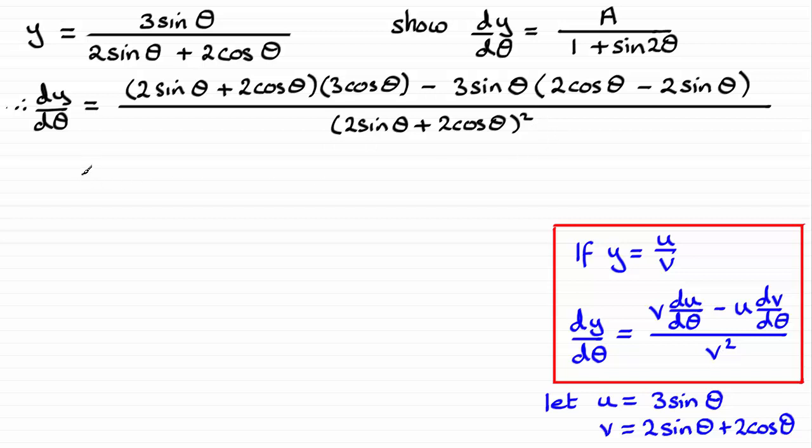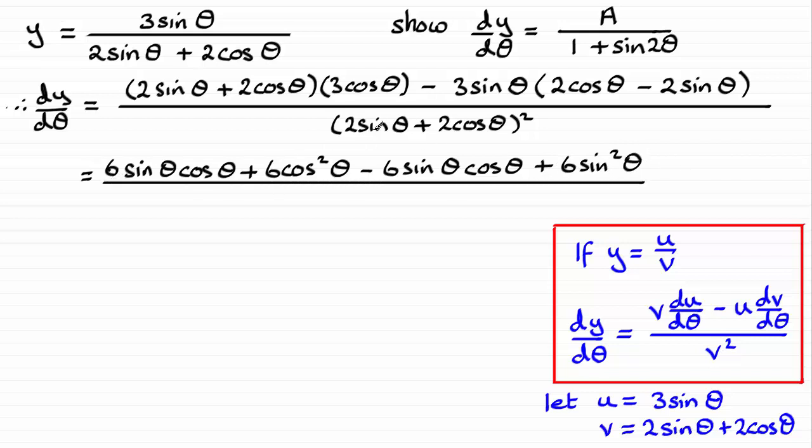So it's just now a question of tidying this up. So if we expand the first bracket, multiply this bracket with 3 cosine theta, we're going to get 6 sine theta cosine theta. And next we're going to get 6 cosine squared theta, 6 cos squared theta. And then we've got minus 6 sine theta cos theta there. And finally we've got plus 6 sine squared theta.